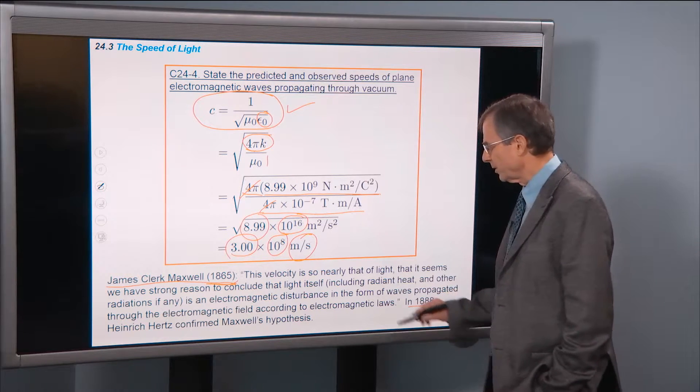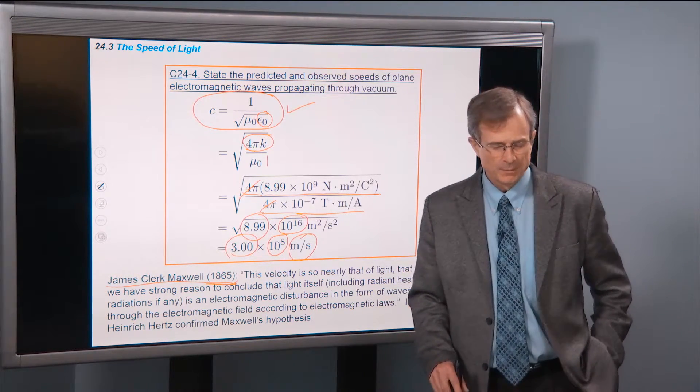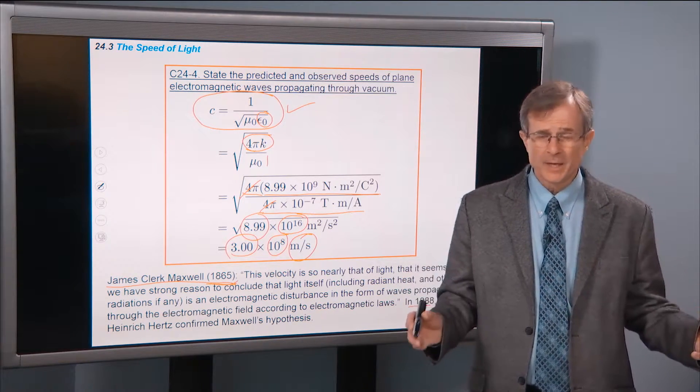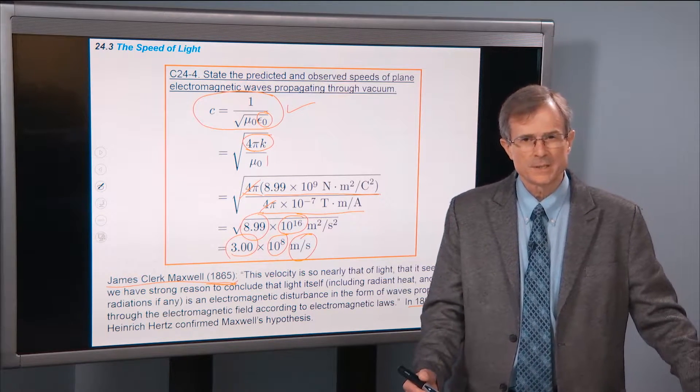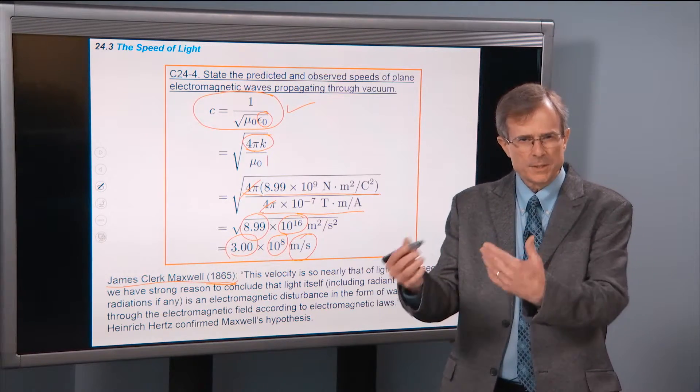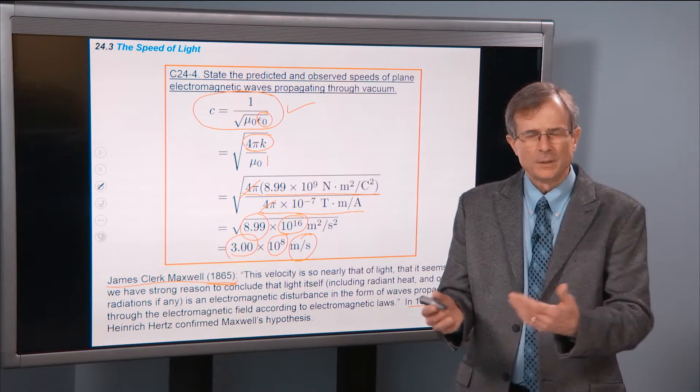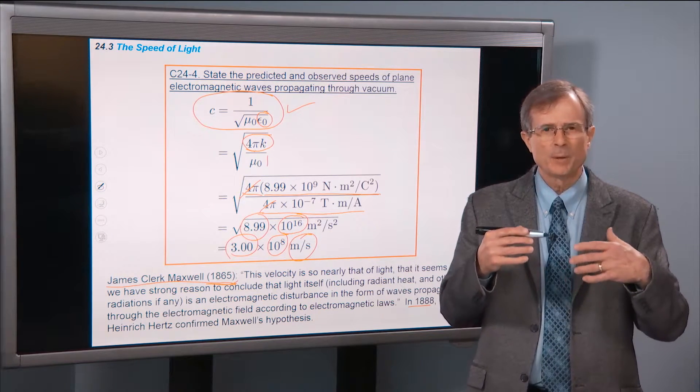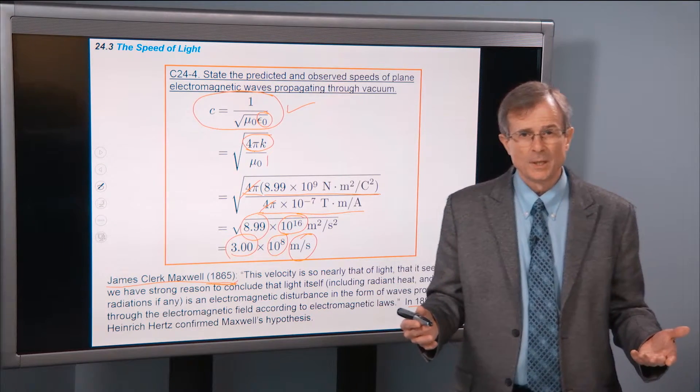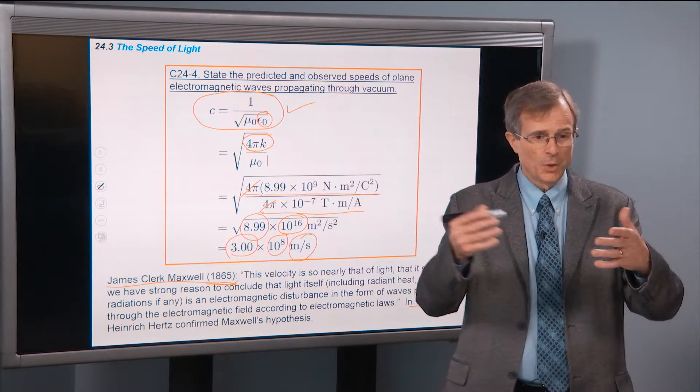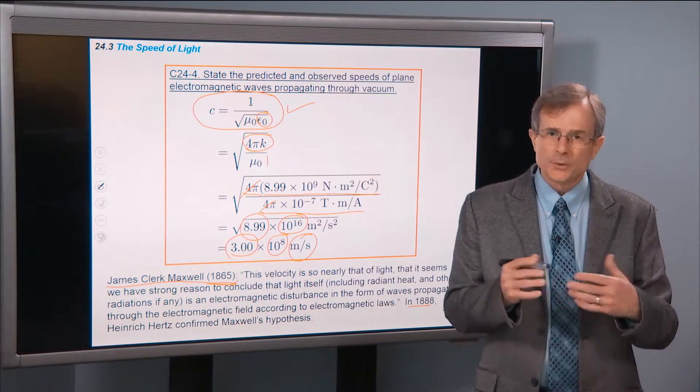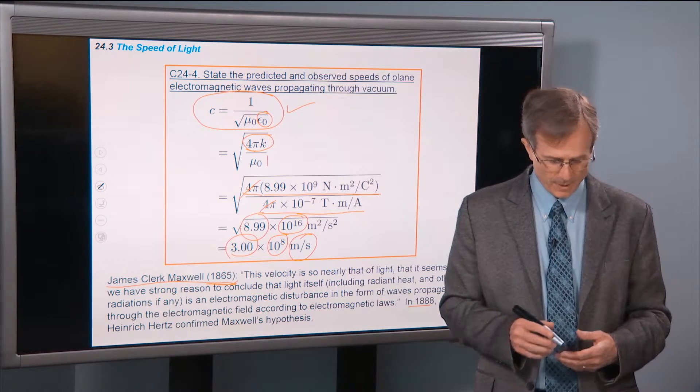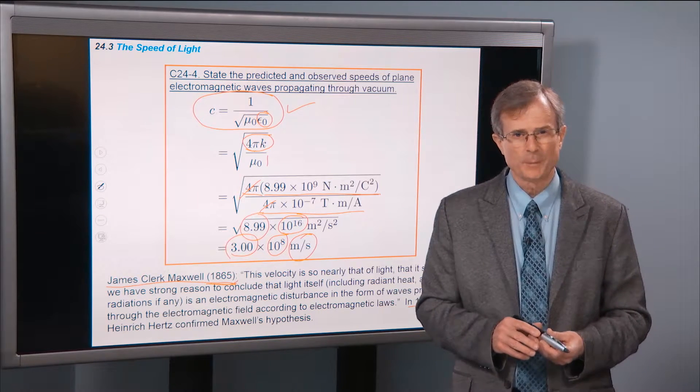is an electromagnetic disturbance in the form of waves propagated through the electromagnetic field according to electromagnetic laws. And then in 1988, Heinrich Hertz did some measurements that confirmed Maxwell's conclusions. So this is one of the greatest triumphs of early physics, to compare this theoretical calculation with actual measurements, and then understand something that had been a part of Maxwell and Heinrich Hertz's lives and everybody else's lives. Everybody knows about light, but suddenly now they understand it better. They know that it is made of electric and magnetic fields and propagates according to electromagnetic laws.